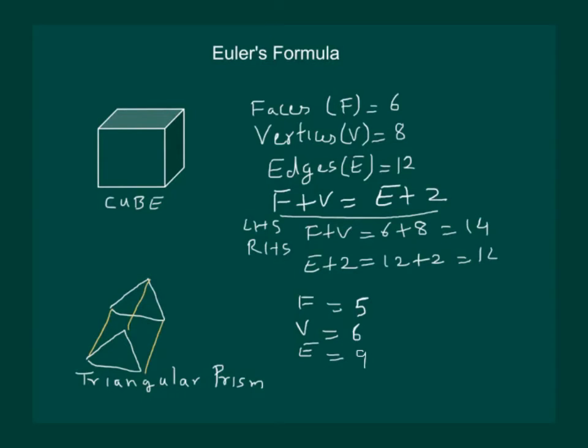Now let us see whether it satisfy this formula which is called Euler's formula. We have F plus V equal to 6 plus 5 that is 11 and E plus 2 would mean 9 plus 2 that is 11. That means triangular prism also satisfies F plus V is equal to E plus 2.